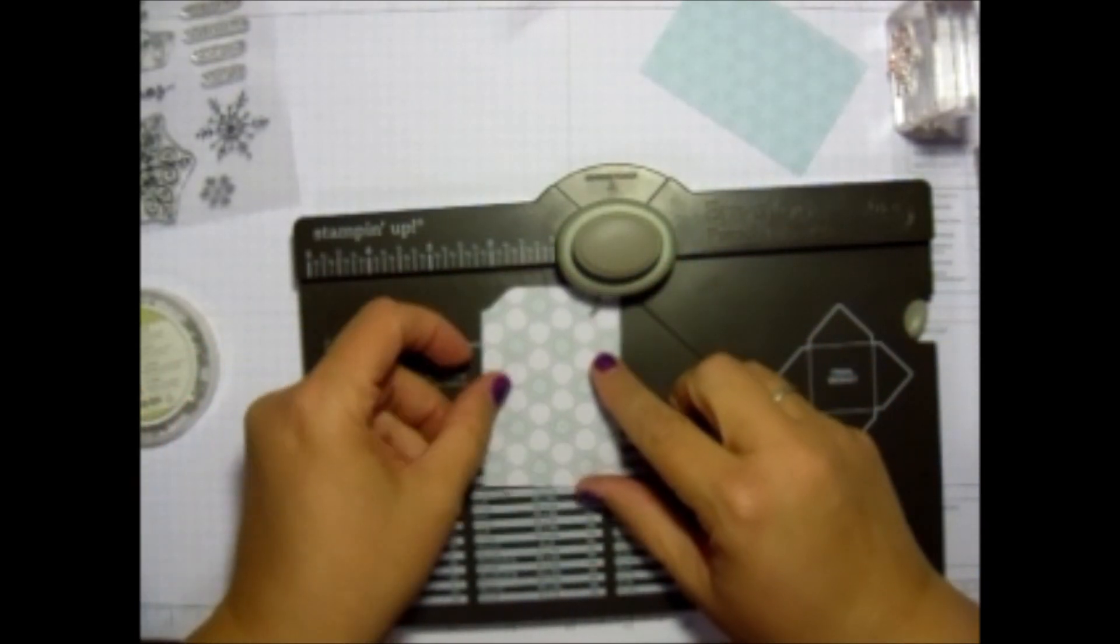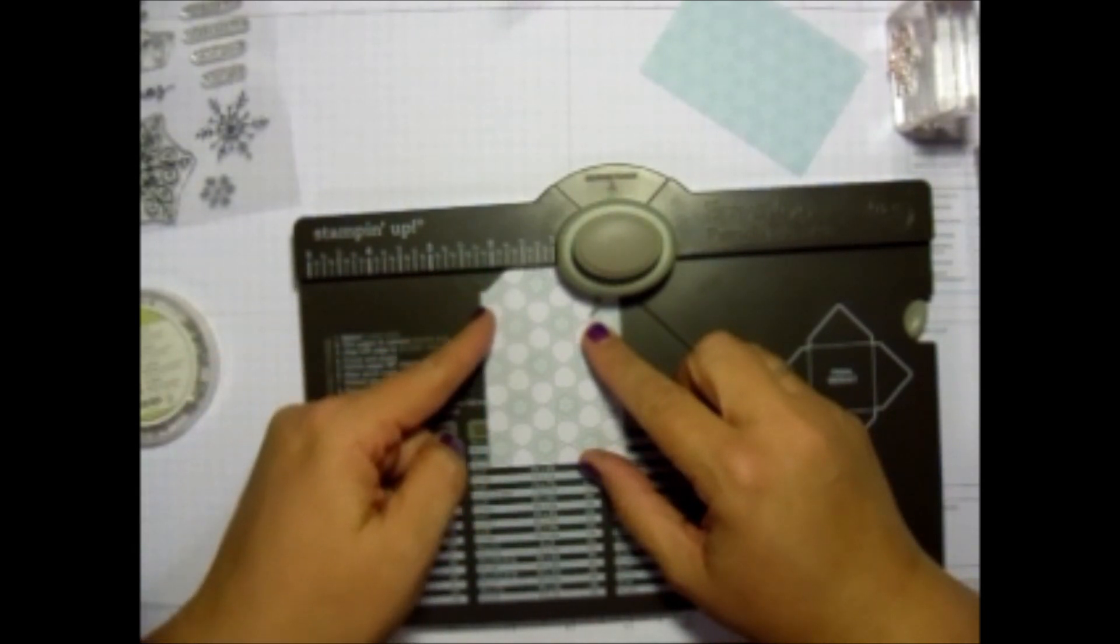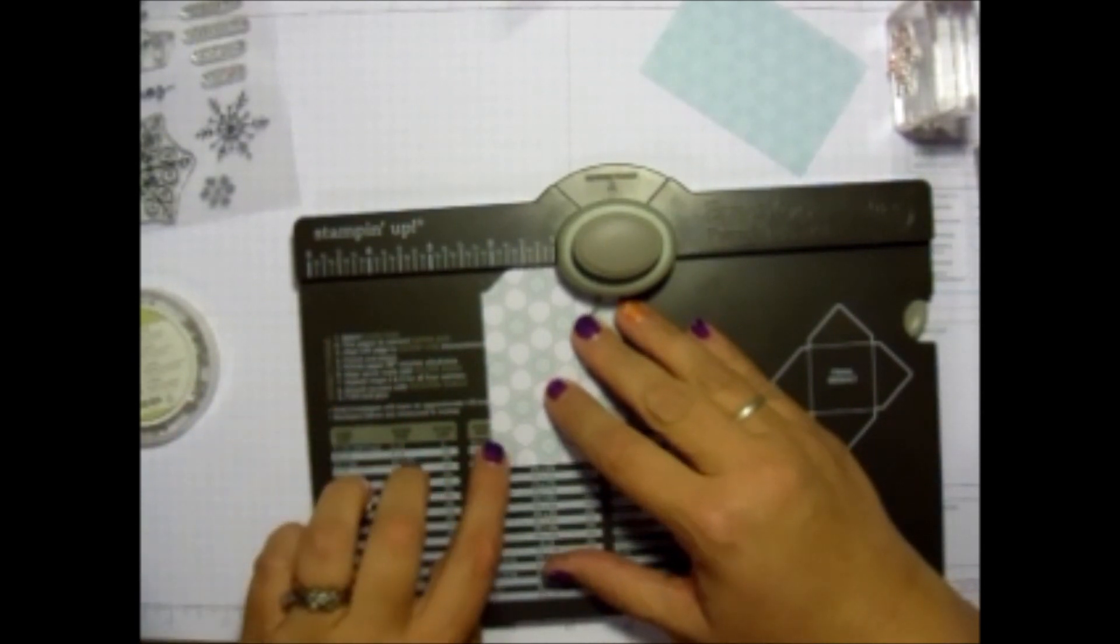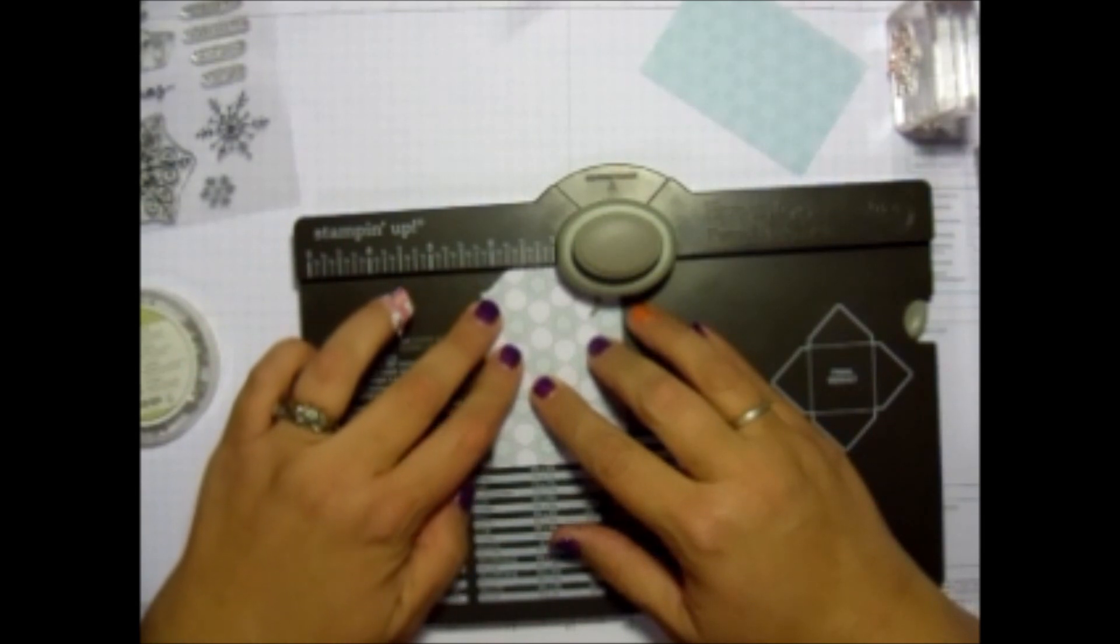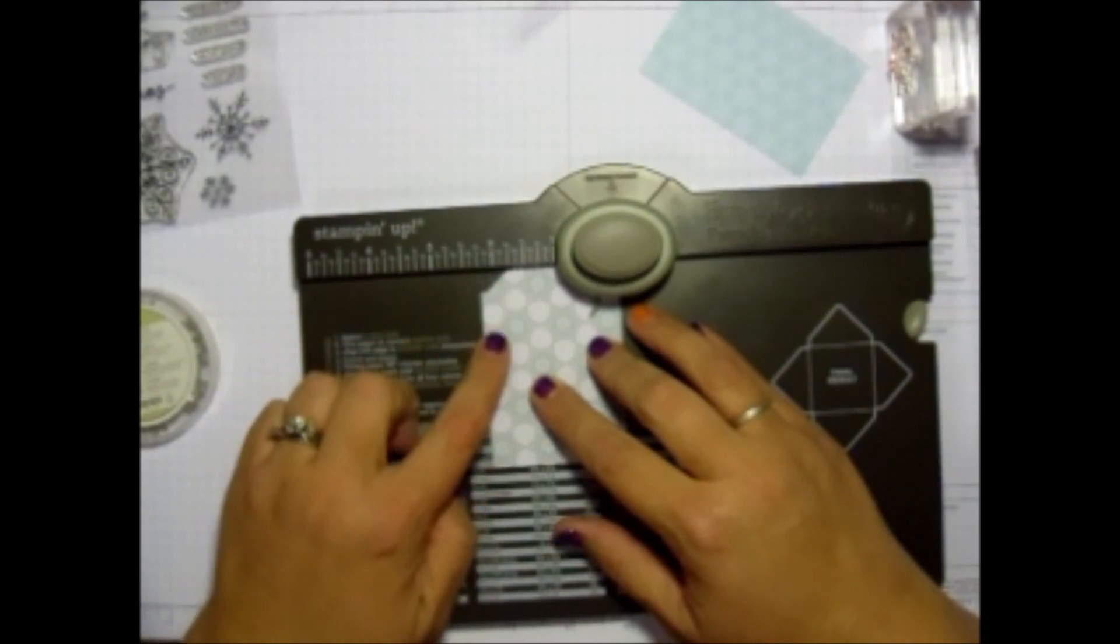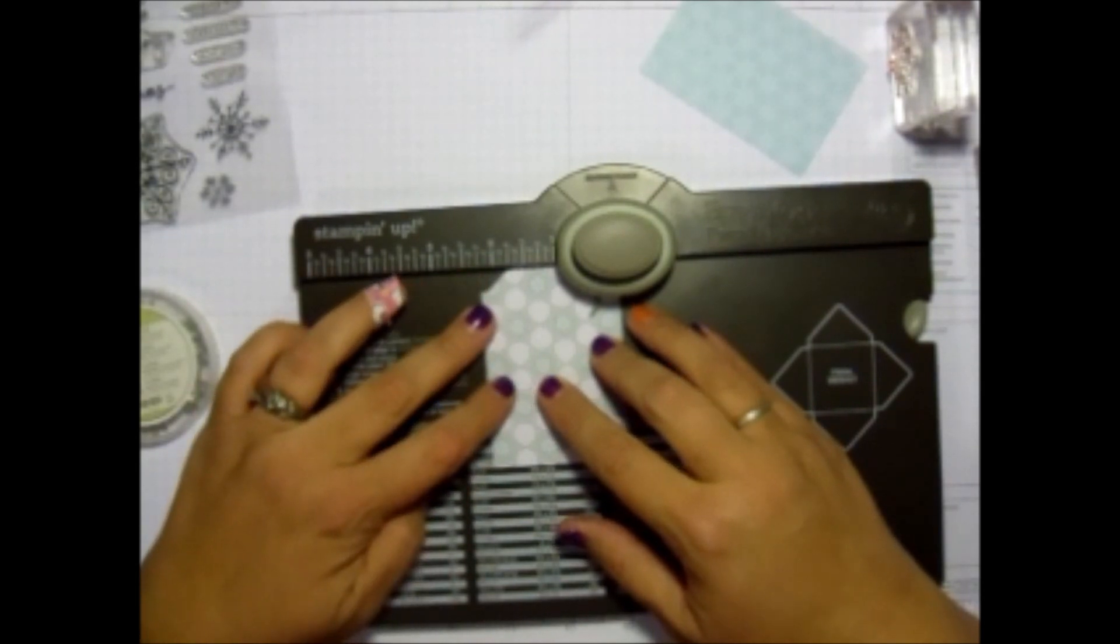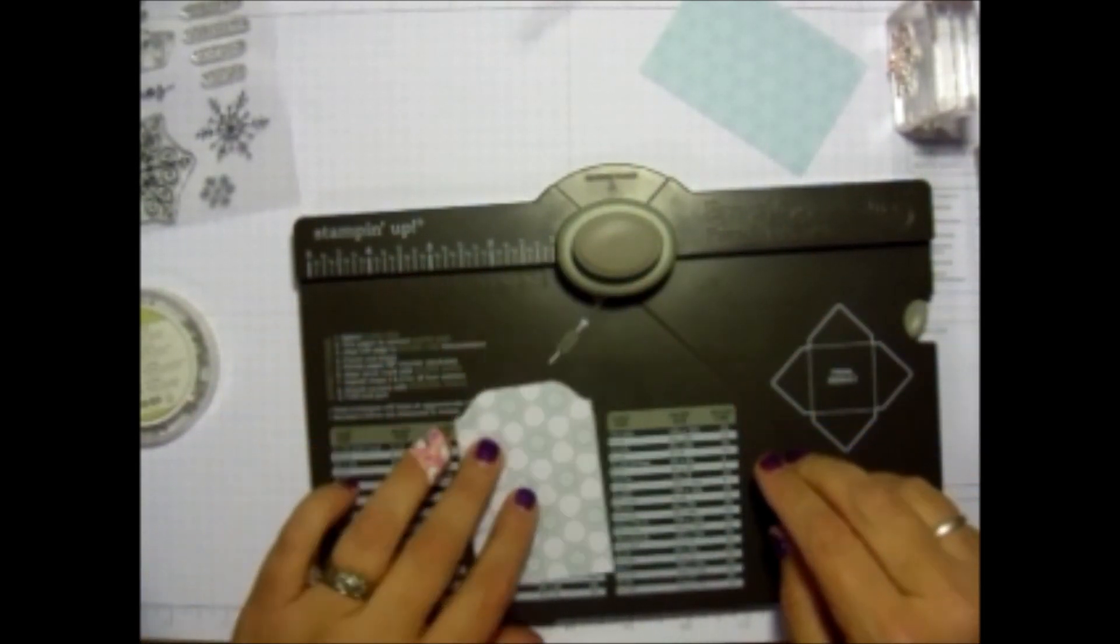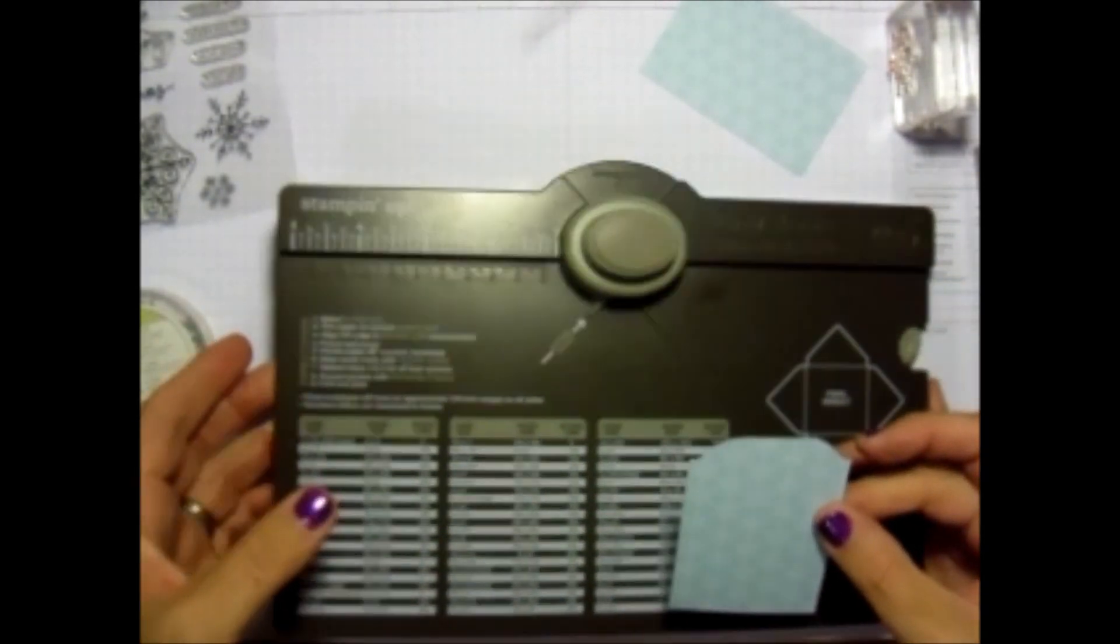So then I'm just going to flip it over. And again, I'm going to go to the one and a quarter. But you see that notch is gone, so I can't line it up perfectly. So I'm going to remember to go to the end of that D, which is also at one, two and one quarter. Sorry if I said one and one quarter earlier, it is two and one quarter.